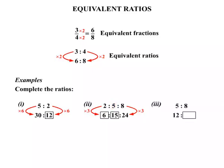Our third example: 5 to 8 equals 12 to something. In this case, we're not going to get a whole number involved as our multiplication. 5 times what makes 12? Certainly not a whole number. What we need to think of is if we do the reverse — we start with the 12.